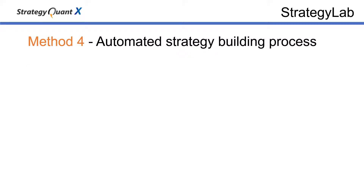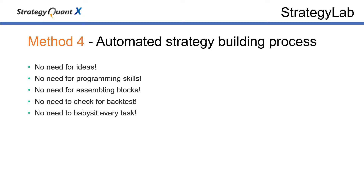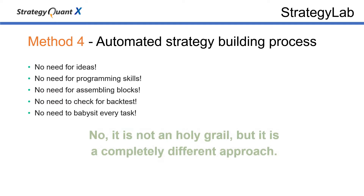With the last option, you can forget all previously mentioned methods. You do not need to search for an idea, you don't need any programming skills or assembling blocks as with builders, and you don't even need to perform any backtest — all options are automated for building strategies. In this method, the most work is about testing the quality and robustness of trading strategies. It might look like a holy grail approach, but it is rather a completely different approach of automated strategy building.